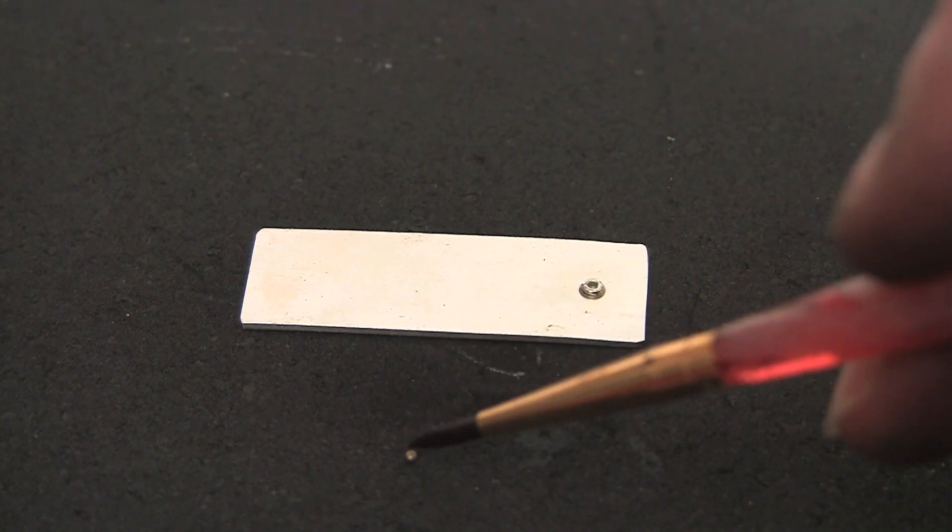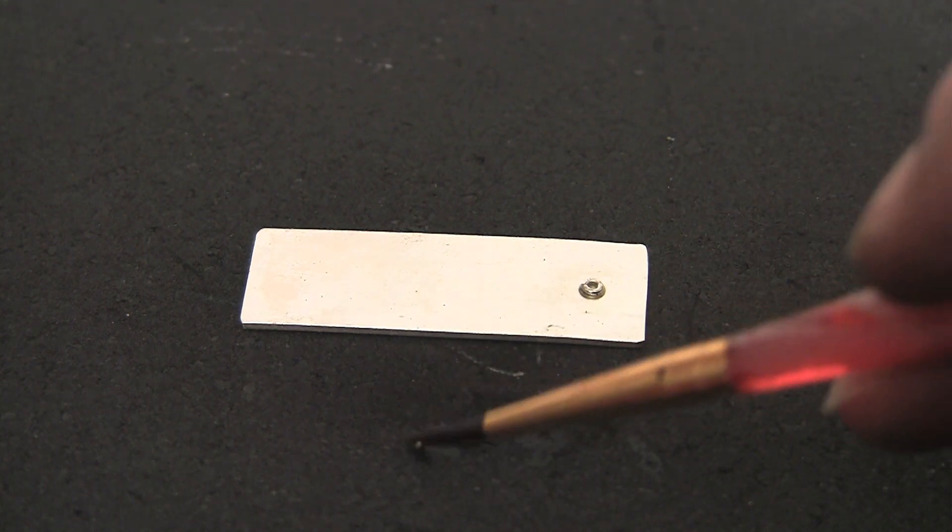Flux the base sheet and the jump ring and place a ball of easy solder in the hole.